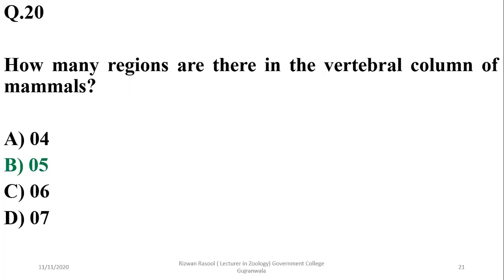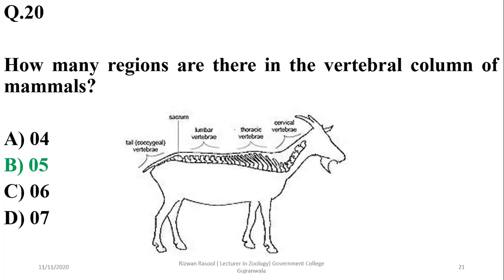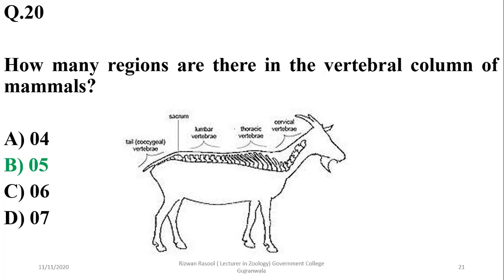Question 20: How many regions are there in the vertebral column of mammals? Usually there are 5 regions: cervical, thoracic, lumbar, sacral, and coccygeal. In humans there are 4 curvatures, as the sacral and coccygeal regions are usually combined. The right option is B.